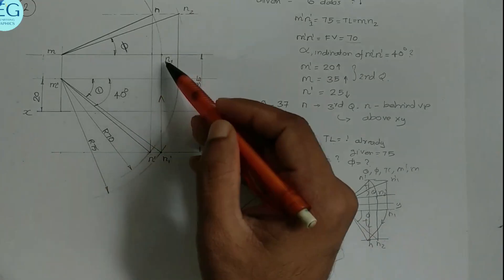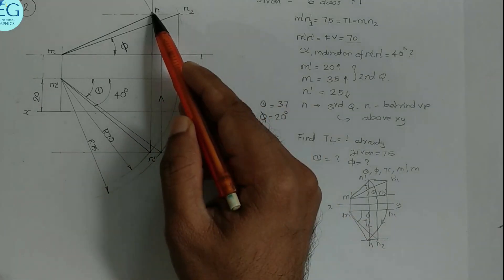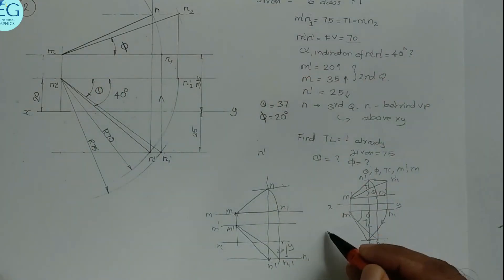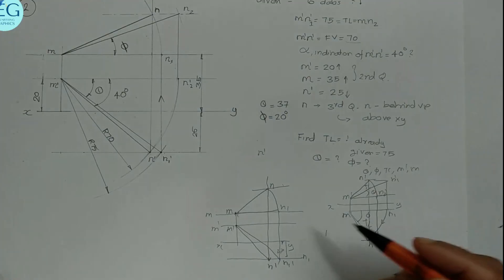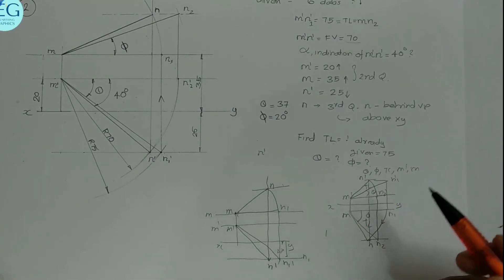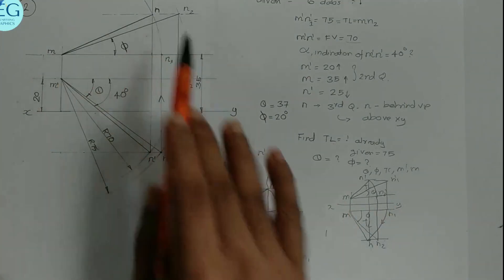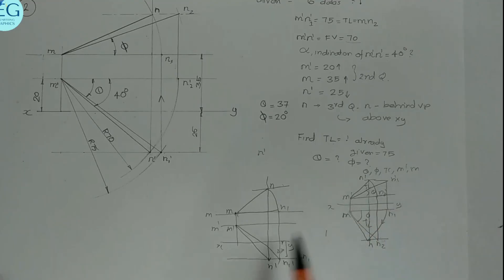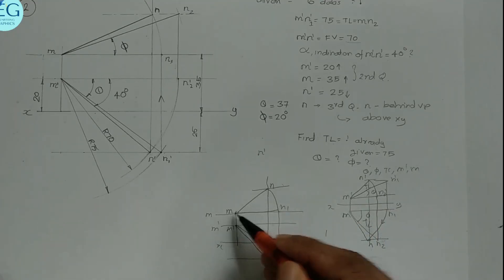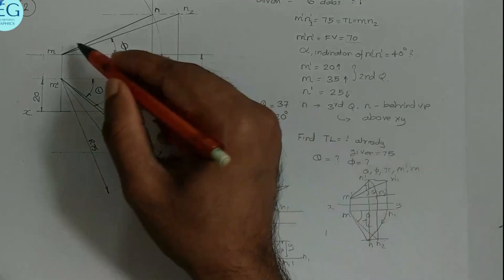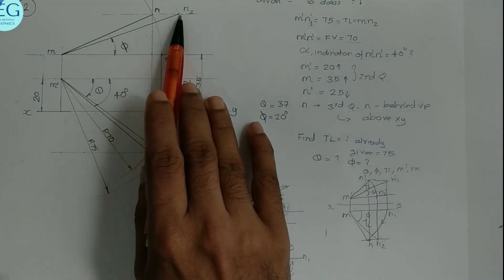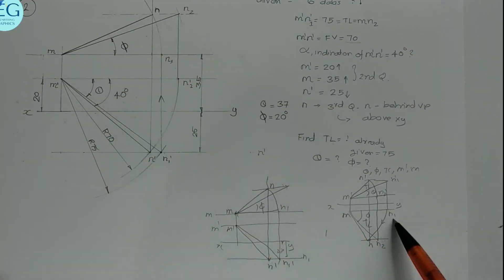The top view MN is now complete. N1 is rotating here along the locus. We find N using the locus of N. MN2 makes angle phi with VP. M'N2' has the same length as M'N1', which is 75mm. So using the true length of 75, we find angle phi equals 20 degrees. This is the angle N2 makes.